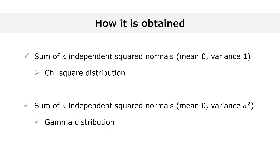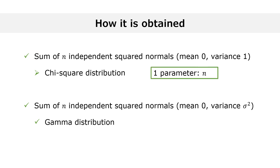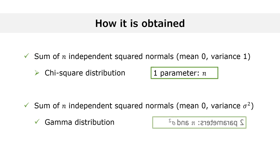As a consequence, while the chi-square distribution has one parameter equal to the number of variables in the sum, the gamma distribution has two parameters: the number of variables in the sum and their variance.